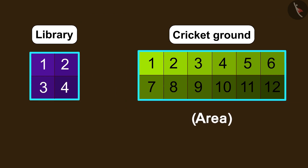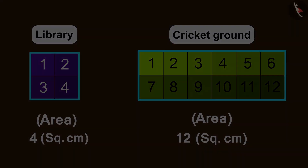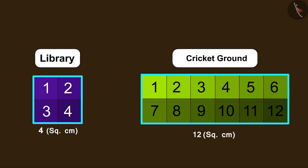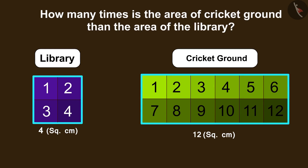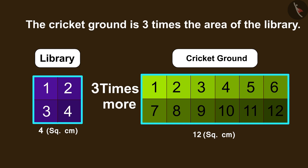So the area of the cricket ground is 12 square centimeters while the area of the library is 4 square centimeters. Now, can you tell how many times is the area of the cricket ground more than the area of the library? You can pause the video to find the answer. Absolutely correct, children — the area of the cricket ground is three times the area of the library.